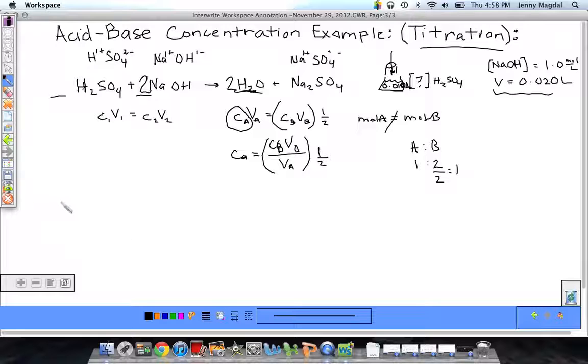And now I can plug in my values. So CA is equal to my concentration of B, which is my base, which I said is 1.0 moles over liters, multiplied by my VB. That's my volume with my NaOH that I use to titrate to get to that neutralization point, 0.020 liters. And I'm going to divide that by my volume of the acid, which is what I had in my Erlenmeyer flask originally, 0.010 liters.